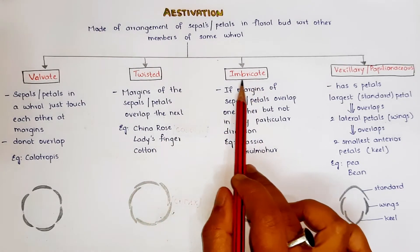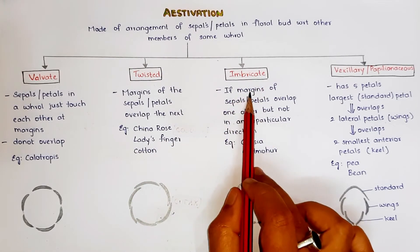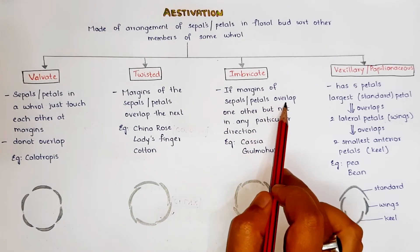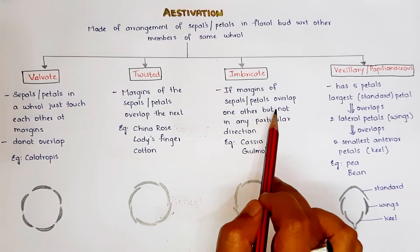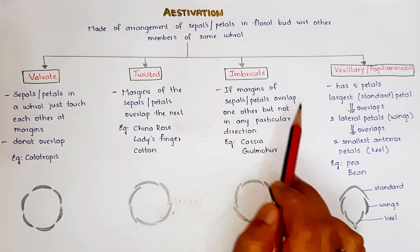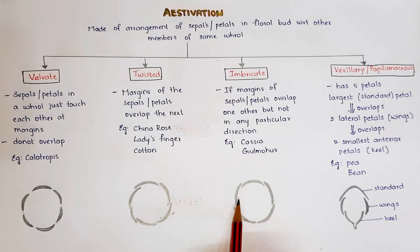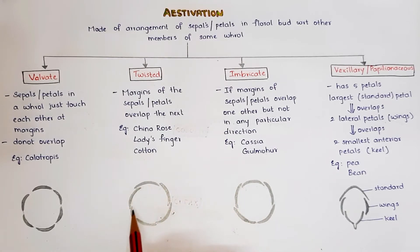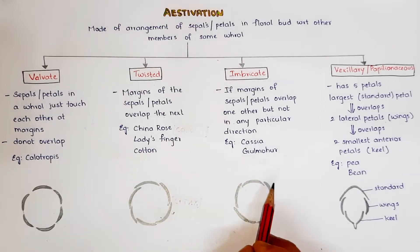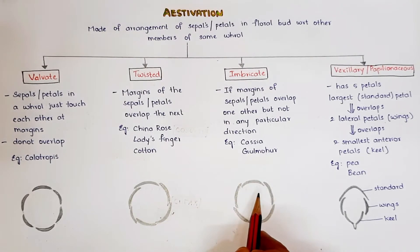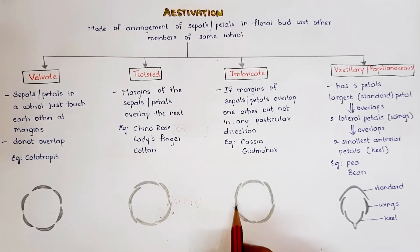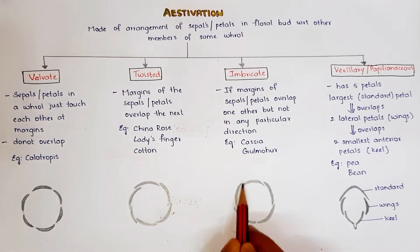Coming to twisted aestivation: the margins of petals or sepals overlap the next one. Each sepal or petal overlaps the next one in a regular manner. Examples of twisted aestivation are china rose, lady's finger, and cotton. In imbricate aestivation, the margins of sepals or petals overlap one another but not in any particular direction — they are irregularly overlapped.